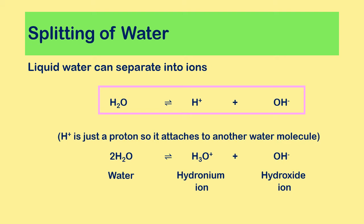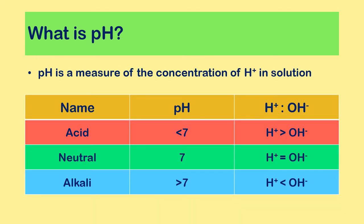pH is a measure of the concentration of H+ or hydrogen ions in solution. In an acid solution the pH is less than seven. In terms of ions, an acid increases the number of H+ ions and decreases the number of OH- ions, so an acidic solution has more H+ ions than OH- ions. Any solution with a greater number of hydrogen ions compared to hydroxide ions will be an acid.